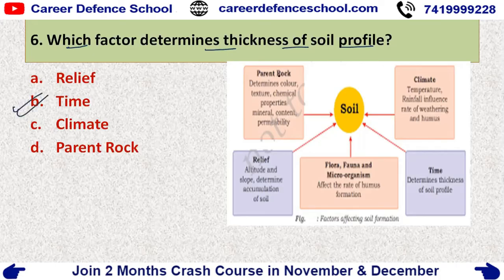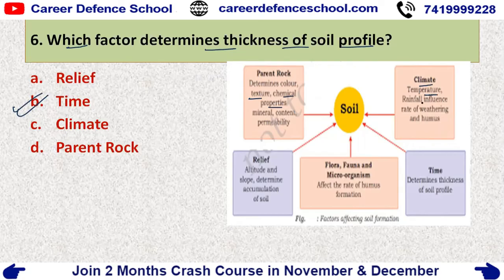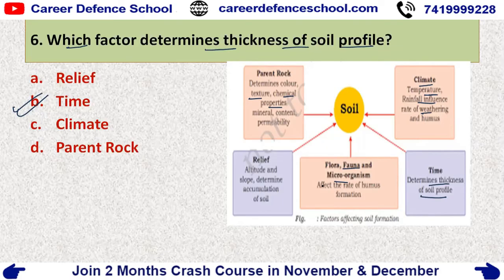Now let's discuss the options. Parent rock determines the soil color, its texture, and its chemical properties. Climate determines temperature or rainfall, and influences the rate of weathering and humidity. Time determines the thickness of the soil profile, which was our question. Flora, fauna, and microorganisms affect the rate of humus formation. Relief determines altitude and slope, and also determines the accumulation of soil.